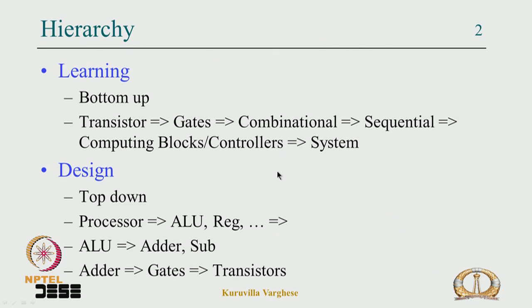In learning, you always learn bottom-up — from the smallest building block to the complete system — going hierarchically like transistor, gate, combinational, sequential, and then the system. But while designing you go top-down: you take a processor, break it into pieces, take each piece and break it further, all the way to gates and transistors. When you design, remember this hierarchy; while learning, the opposite applies.